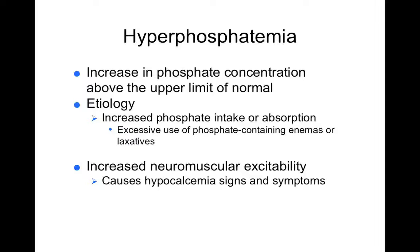With hyperphosphatemia — high phosphate — you have more substrate for ATP, so you can make a lot of ATP. An increase in phosphate intake can lead to increased neuromuscular excitability: skeletal muscles more excited, cardiac muscles more excited, and smooth muscle as well. That's consistent with hypocalcemia signs and symptoms.